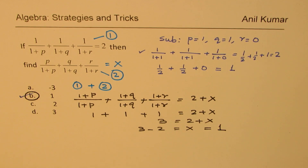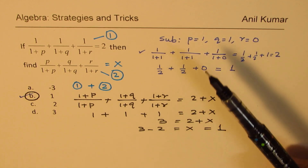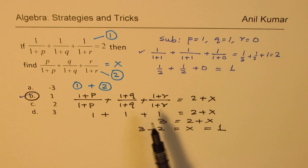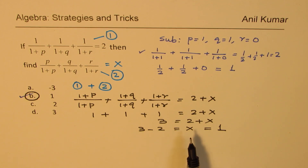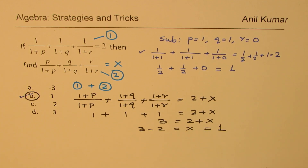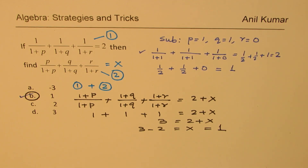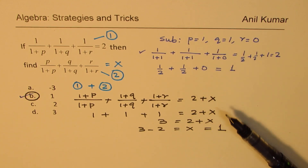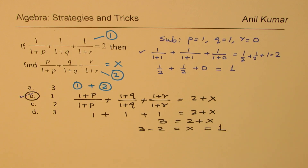Even these three algebraic steps are not bad, and we get the same answer. If you don't get a clue for substituting values like 1, 1, and 0, but you know the algebraic strategy, you can still solve this question within a minute. The whole idea of this series is to understand these strategies and approach them either way. The first method might take a few seconds depending on how fast you guess, but the algebraic method also takes less than a minute.